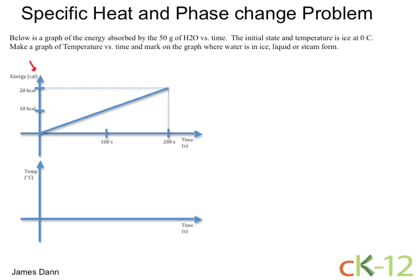This graph tells us that the hot plate is putting out 20,000 calories after 200 seconds. And since it's a straight line we can see that it's outputting 10,000 calories after 100 seconds. That tells us that the rate of heat that this stove is giving off is,